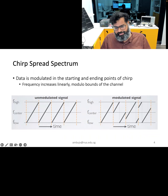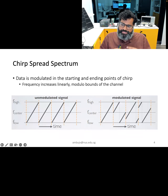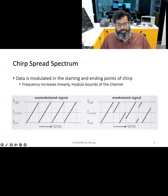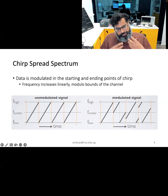An unmodulated chirp is only a linearly increasing or decreasing frequency with time. However, to modulate the chirp and encode data, the information is typically contained in the starting and ending point of the chirp. As seen in the figure on the slide, these abrupt changes comprise the information that needs to be transmitted. These abrupt changes contain the individual bits or cluster of bits that one particular chirp carries, which are then wirelessly transmitted.